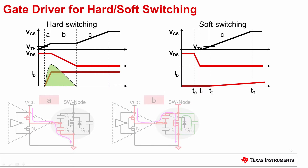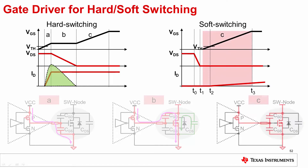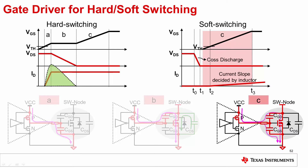With soft switching, the previously mentioned three stages is now only one stage. There is no Miller charge. Turning on the device when the COSS is fully discharged, the device channel current is decided by the external circuit, not parasitics. Generally, the dI/dt is very slow compared with hard switching, so there is no overlap and there is no turn-on loss.